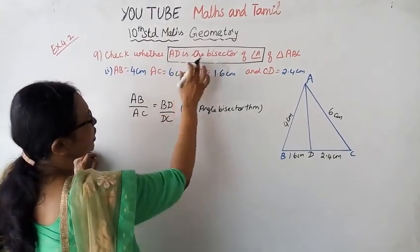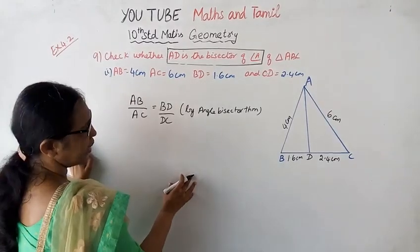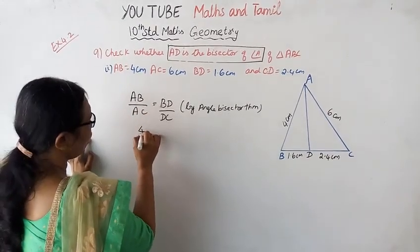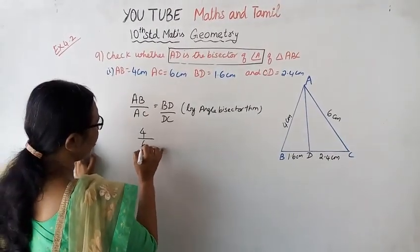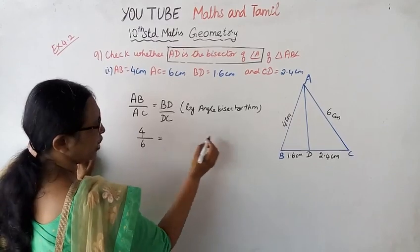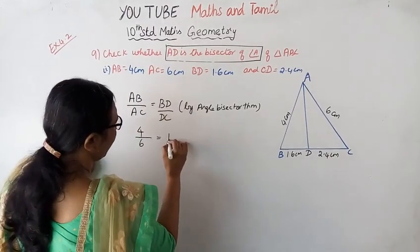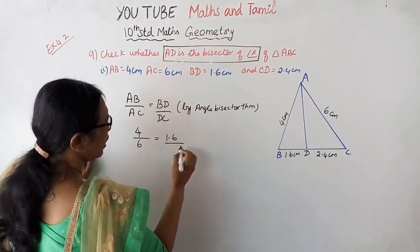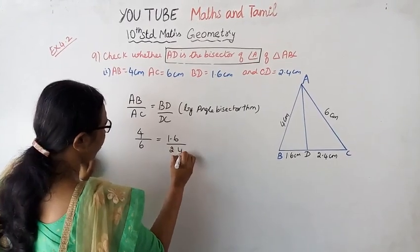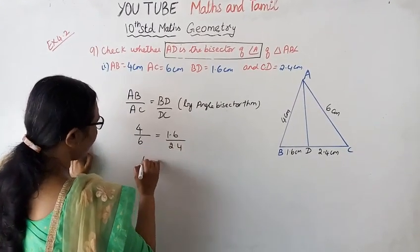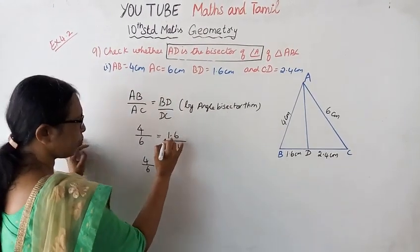AD is the bisector of angle A. The given values are: AB equals 4, AC equals 6. This is a very easy sum. BD equals 1.6, DC equals 2.4. So 4 by 6 equals 1.6 by 2.4 — let's check the decimal.